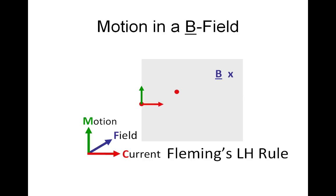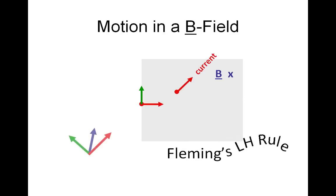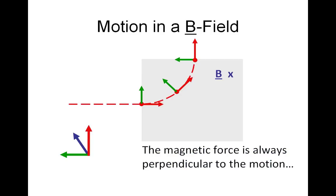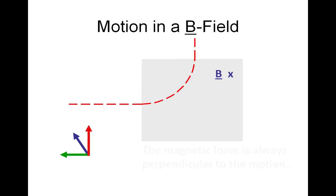As the particle moves on, notice that the current has changed direction, so we have to change the direction of Fleming's left hand rule. The direction of the force continually changes. The magnetic force is always perpendicular to the motion, so we end up with circular motion. In other words, the magnetic force acting on this charged particle is a centripetal force.